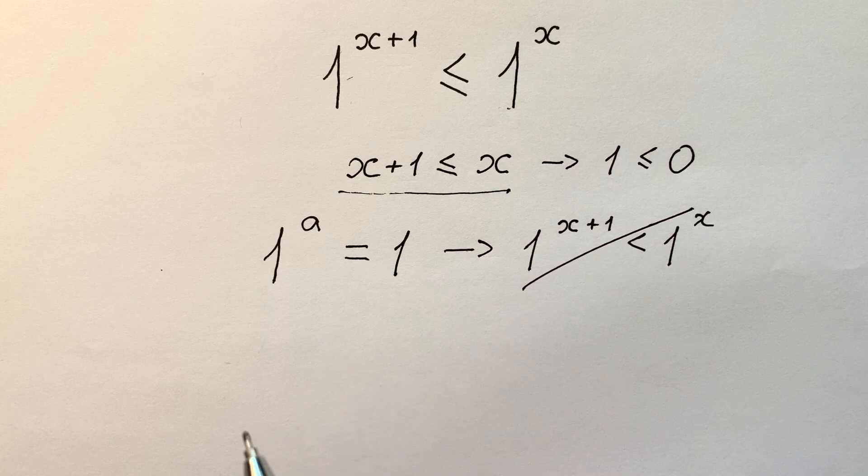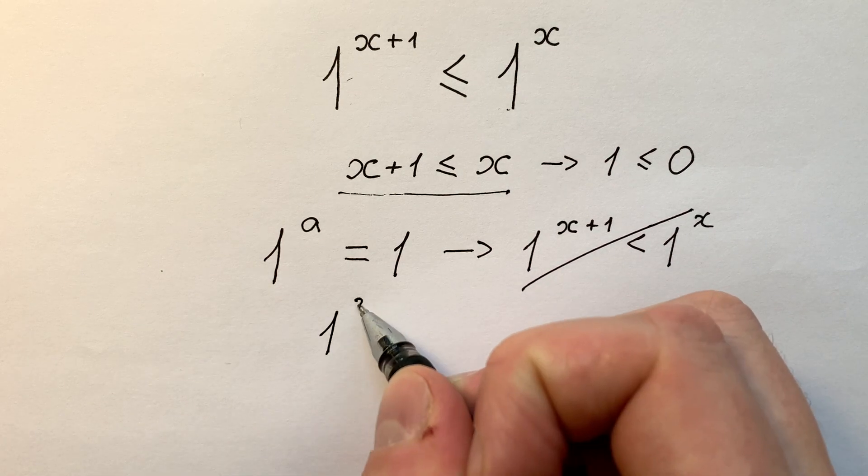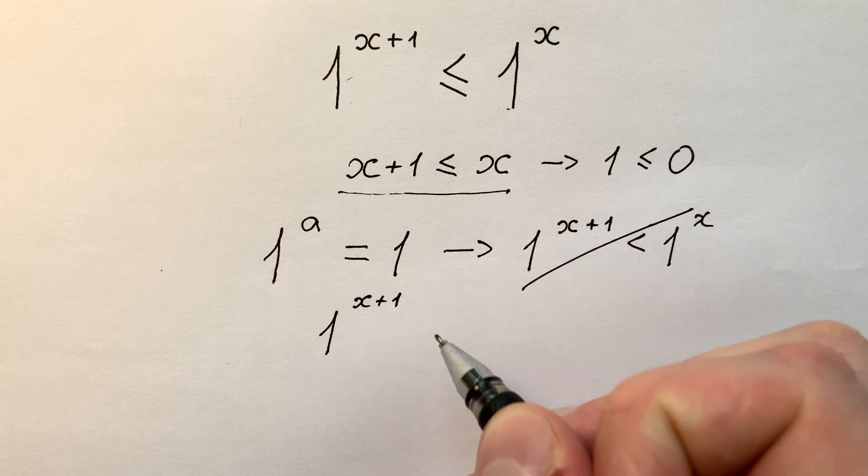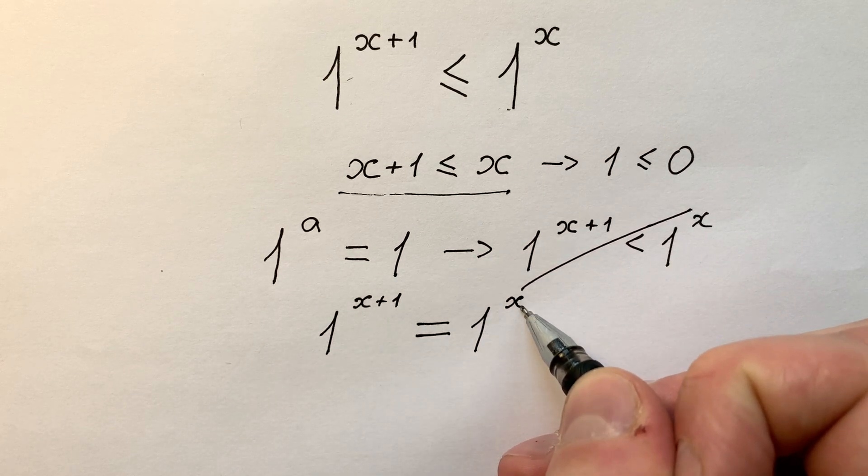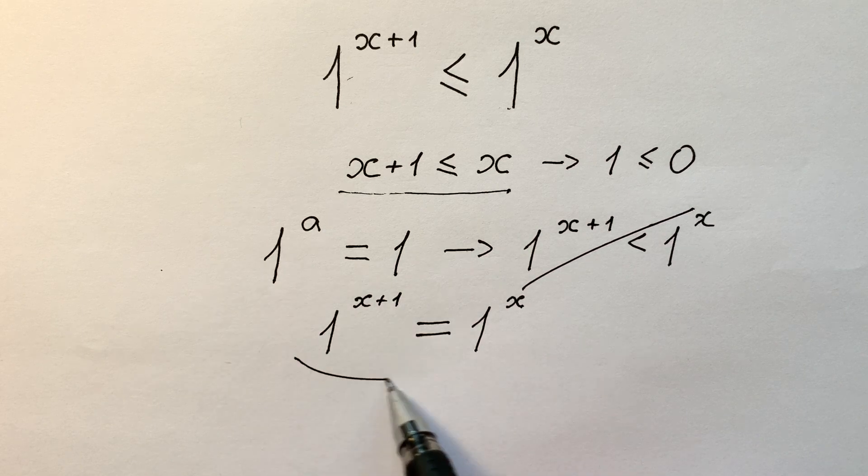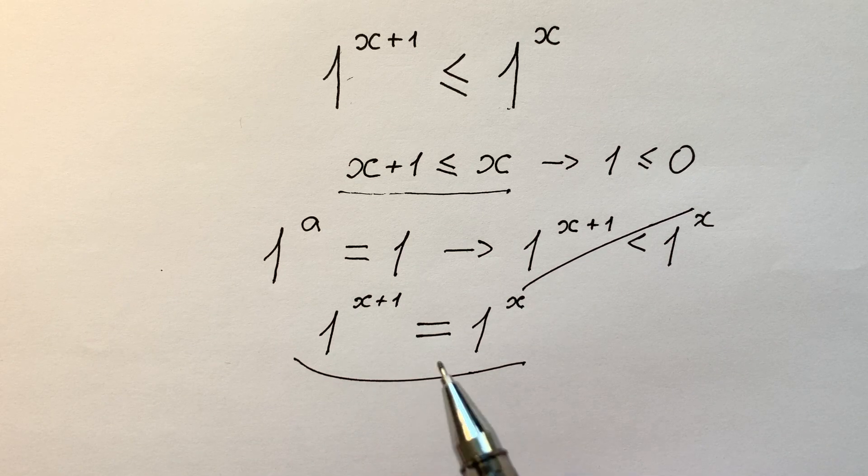And now we have only one way: 1 to the power of x plus 1 equals 1 to the power of x. And we understand that it can be any real x.